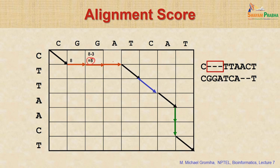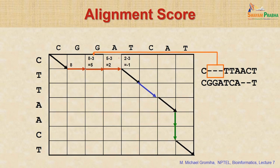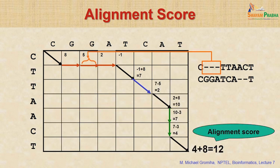In reality, the gap penalty should be larger than the mismatch score. Starting the calculation: C and C match gives score 8. Then introducing a gap gives 8 minus 3 equals 5. Another gap gives 5 minus 3 equals 2. Then adding a match with T and T gives minus 1 plus 8 equals 7. A mismatch of T and A gives minus 5, so 7 minus 5 equals 2. Finally, the total alignment score equals 12.